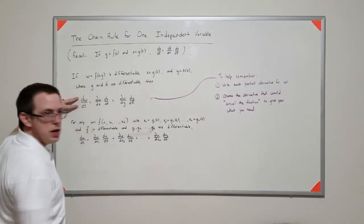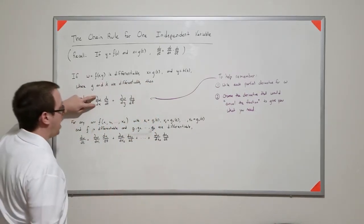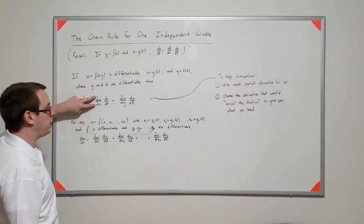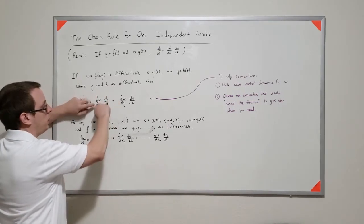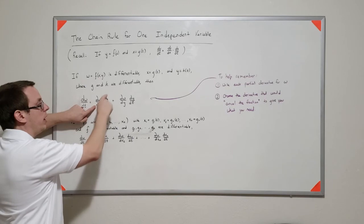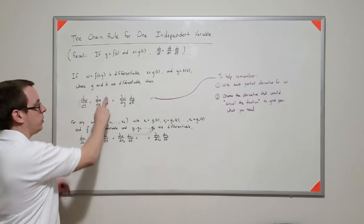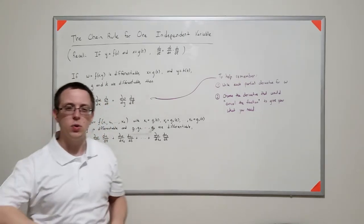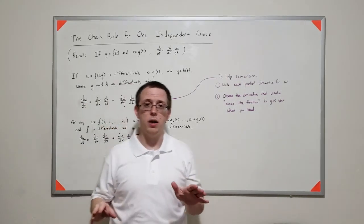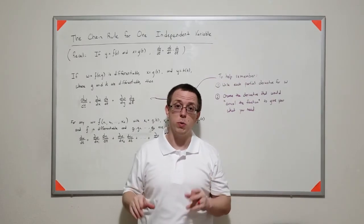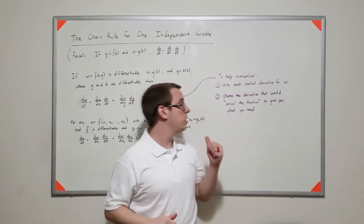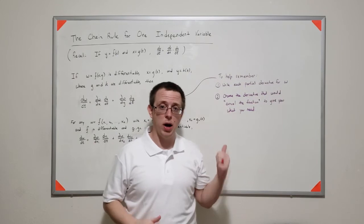So I know I need dw dt, and I have partial w with respect to x. So if I have a dx here, and I don't want it, I need a dx here. And I don't have a dt here, and I want it, so I put it there, right? And so the fractions cause that to cancel. Again, totally not the mathematical rigorous way to do it, but for practical purposes, it's a pretty easy way to remember how to do these things.